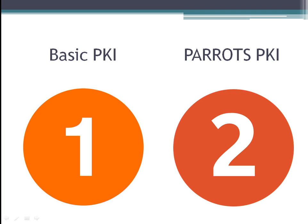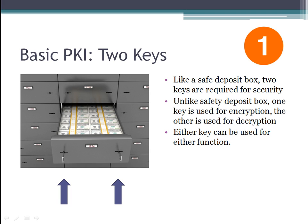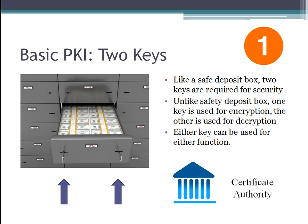We're going to talk about two things basically. One is the basic public key infrastructure, PKI, and the second one is how PARRITS handles PKI. The basic idea of PKI is there's two keys. Like a safety deposit box, two keys are required for the security to happen. Unlike a safety deposit box, though, only one key is used for encryption and the other is used for decryption. Either key can be used for either function. Where do these keys come from? There's a certificate authority — actually many certificate authorities — but imagine there's one that will give keys out to all the people who want to communicate privately. Each individual person will have one public key and one private key — actually, each identifier will.